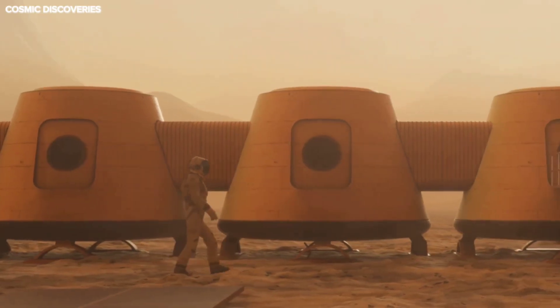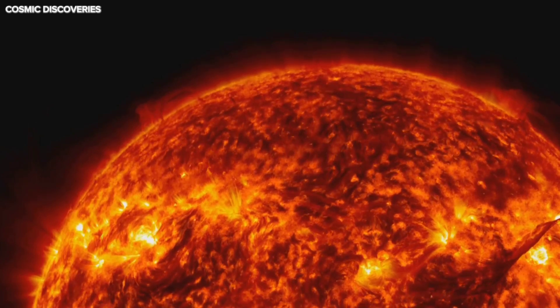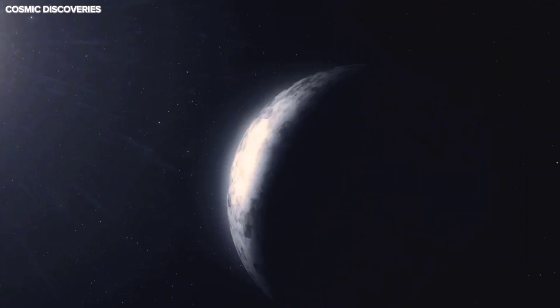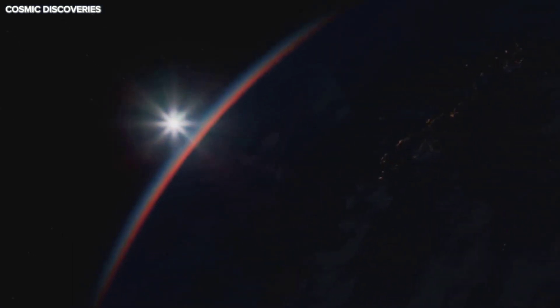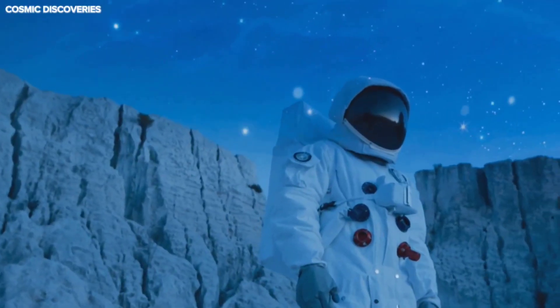But life here would face huge challenges. Proxima Centauri is volatile, unleashing powerful flares that could strip away atmospheres and water. The planet is likely tidally locked—one side in perpetual day, the other in endless night. The day side scorches, the night side freezes. Life would have to adapt to extremes.